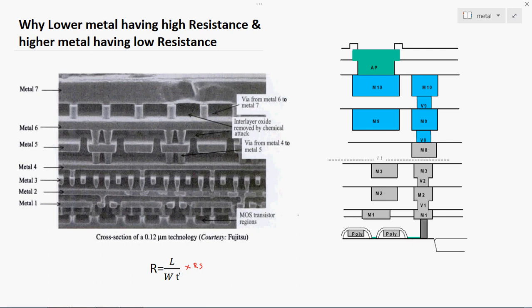In Figure 1, consider the cross-sectional view after fabrication. The layout of the metals will look like this. The bottom lines represent the active region — gate terminal, drain terminal, or source terminal. These terminals connect through vias (poly to metal 1 vias) up to metal 1. This is metal 1, and the thickness of metal 1 is very low.